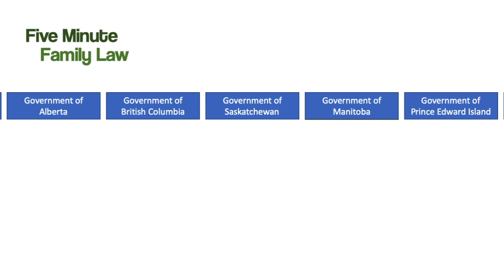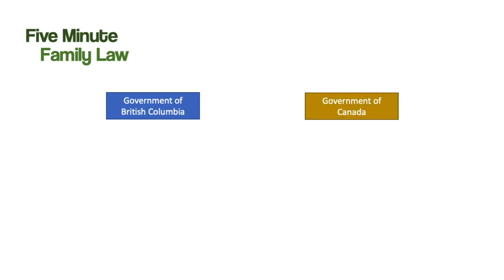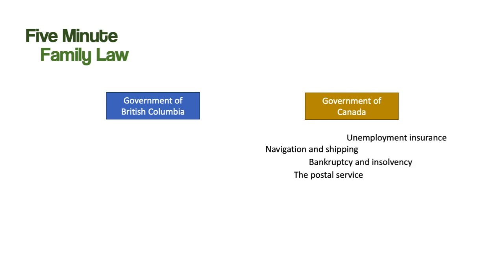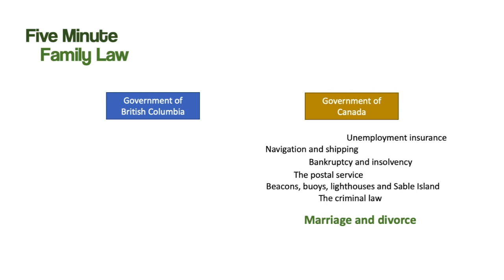For the purposes of this discussion, we care about the Government of British Columbia and the Government of Canada. Section 91 of the Constitution Act gives the federal government powers over things such as navigation and shipping, the postal service, unemployment insurance, bankruptcy and insolvency, beacons, buoys, lighthouses and Sable Island, the criminal law, and most importantly, from the point of view of someone who practices family law, marriage and divorce.